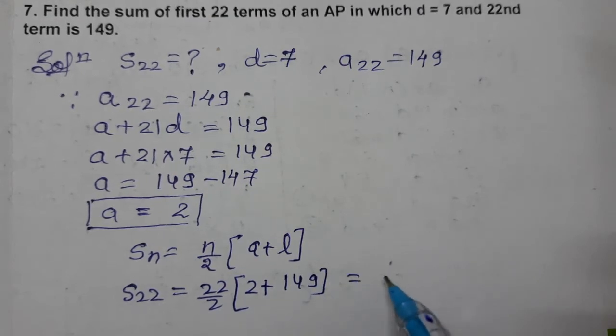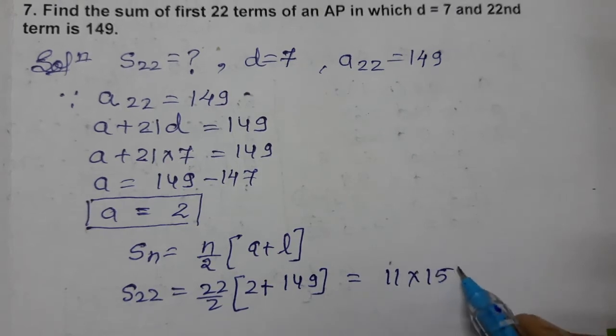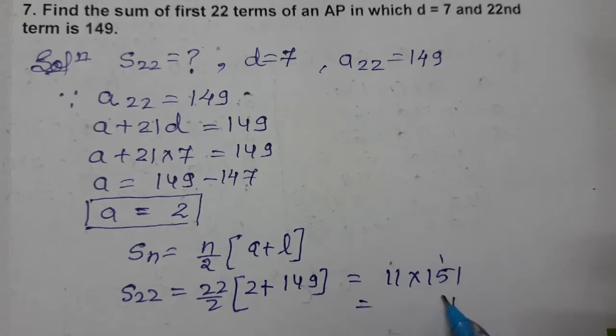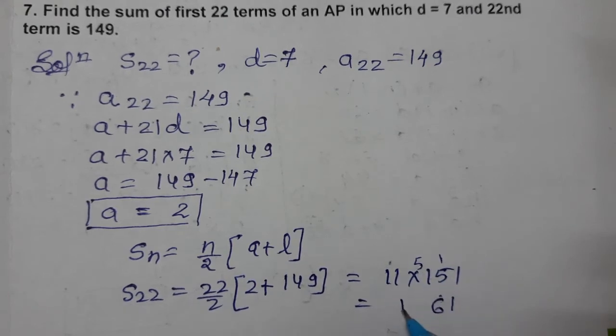22 by 2 equals 11. So 11 times (2 + 149) equals 11 times 151, which equals 1661.